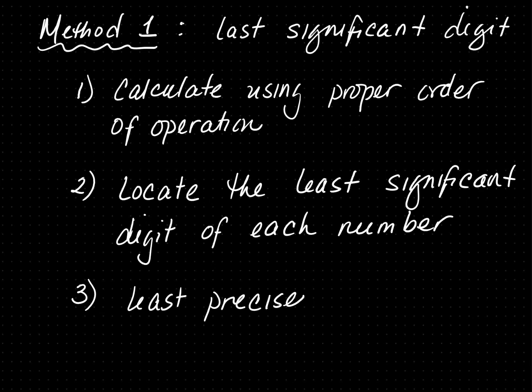In method one, we look for the last significant digit in the number. The first thing you're going to do is calculate using proper order of operations from math class. Then you're going to locate the least significant digit of each of the original numbers — not the calculated number, but the original number given — and round to the least precise position.